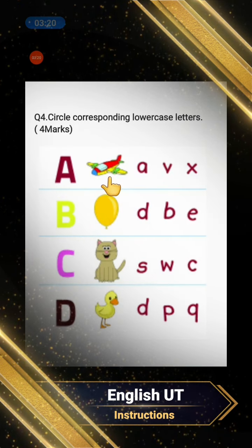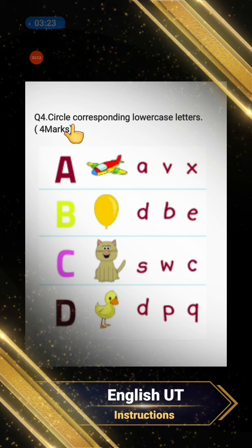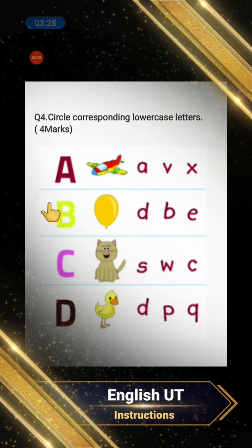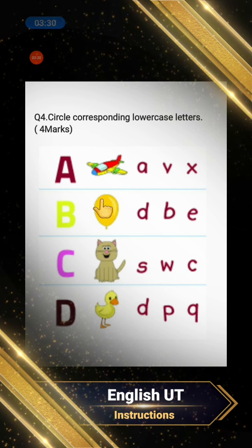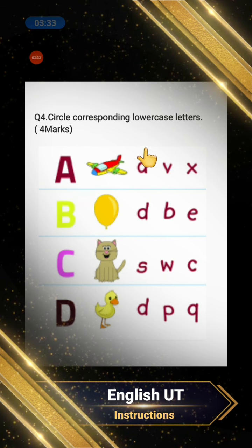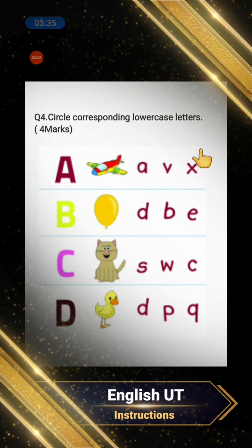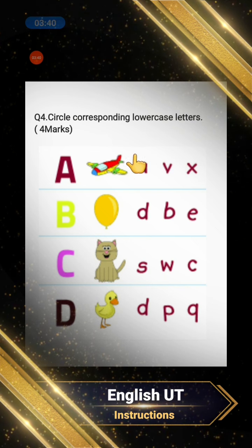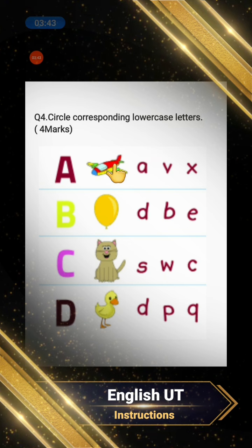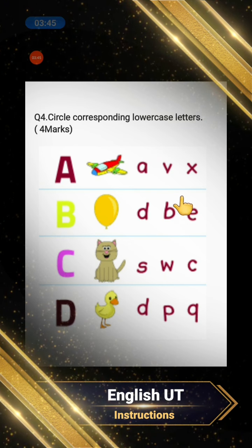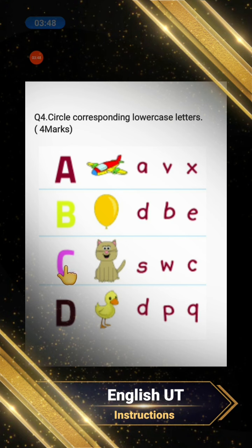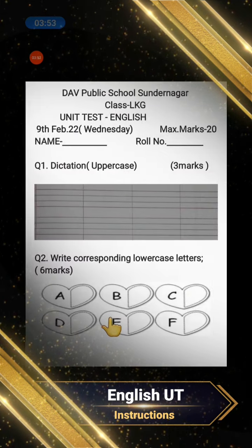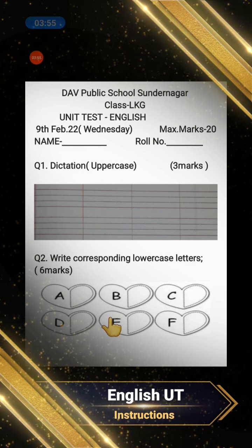Now let's move to question number four — this is your last question. Circle the corresponding lowercase letters. The uppercase letters are written and there are pictures alongside them. For example, uppercase A is shown — you have to circle the matching lowercase. Uppercase B, circle lowercase b. Pictures include balloon, cat, duck — it's very easy!